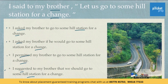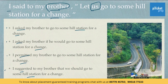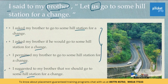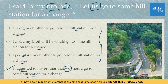In the question, it is clearly stated that he is asking his brother that we should go to some hill station for a change. The first three statements are such that only his brother would go to the hill station. But look at the last option: 'I suggested to my brother that we should go to some hill station for a change.' So the right option is option D.